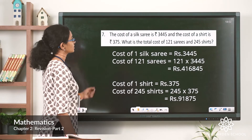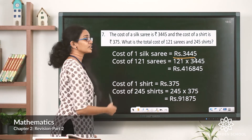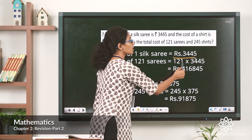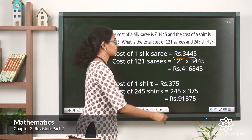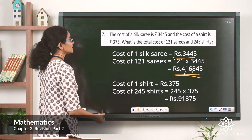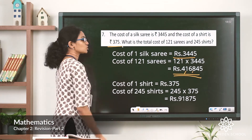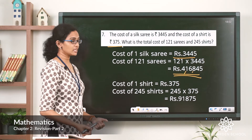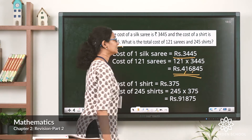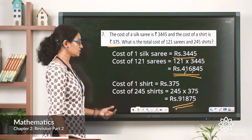The cost of one silk saree is rupees 3,445. The cost of 121 sarees is 121 into 3,445, which equals rupees 4,16,845. Now for the shirts: cost of one shirt is rupees 375. The cost of 245 shirts is 245 into 375. After multiplication, the product is rupees 91,875.